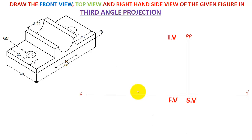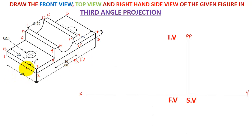Before starting the solution, let's give naming to each vertex of the 3D figure. In this case we don't have any arrow for the front view, top view, and side view, so this side is the front view and this could be my right hand side view, because the observer has to move towards their own right hand side to make the right hand side view of this figure.